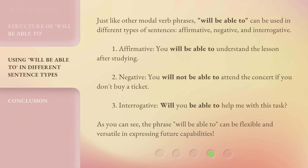Just like other modal verb phrases, 'will be able to' can be used in different types of sentences: affirmative, negative, and interrogative. As you can see, the phrase 'will be able to' can be flexible and versatile in expressing future capabilities.